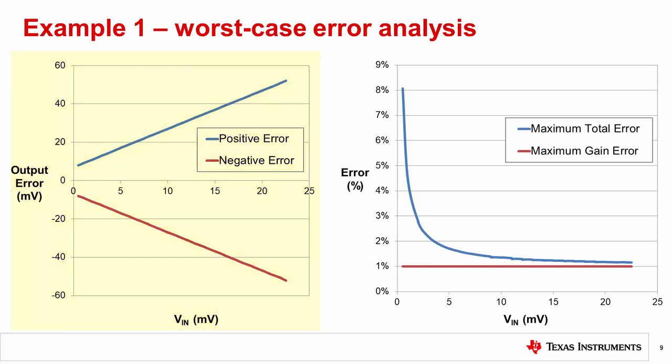The plot on the left shows the output error in volts, between the actual and ideal outputs. In this case, you can see that the error voltage changes linearly with input voltage. The relative errors are plotted on the right. As stated earlier, relative gain error is constant over the input range. The total error curve includes the offset error, so error increases with a 1 over x relationship. We recommend selecting an amplifier with a gain error specification that meets or exceeds your total error requirement.